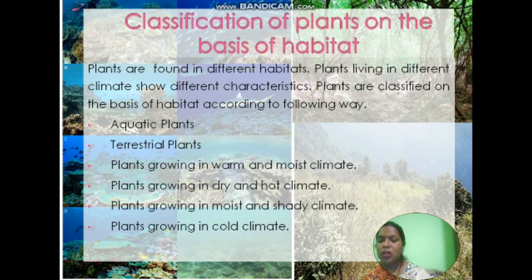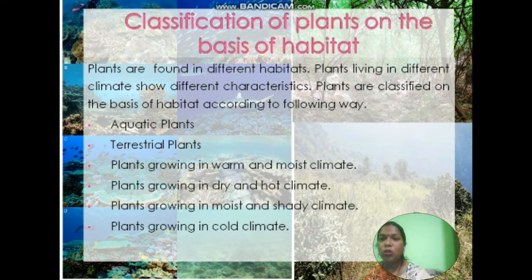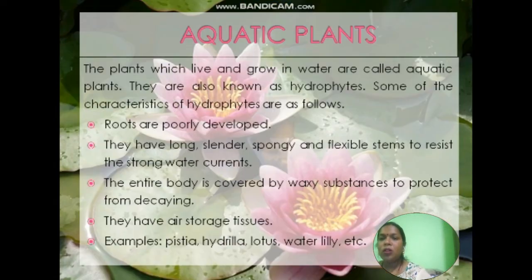Further categories include plants growing in warm and moist climate, plants growing in dry and hot climate, plants growing in moist and sunny climate, and plants growing in cold climate. Aquatic plants are the plants which live and grow in water.